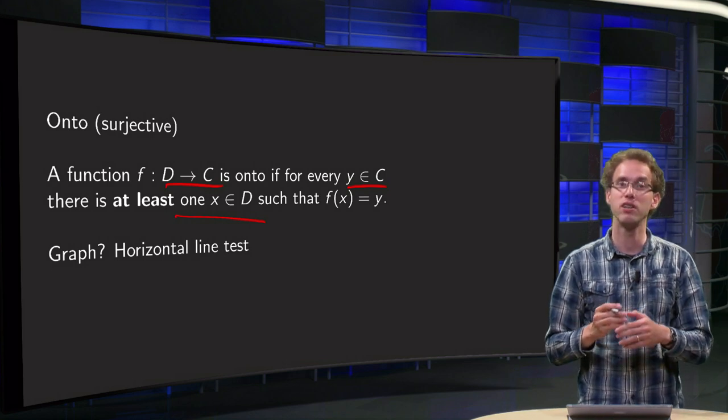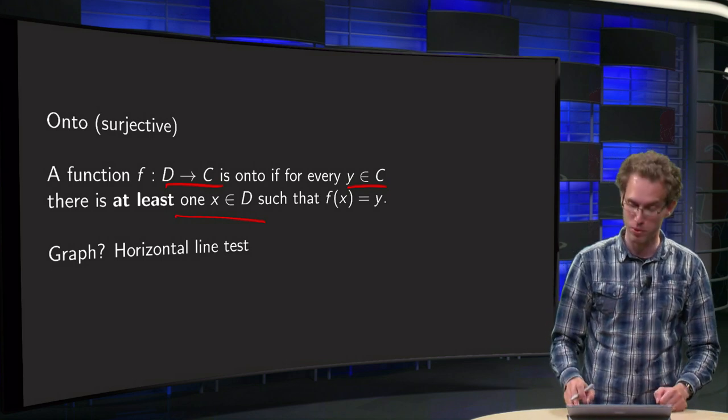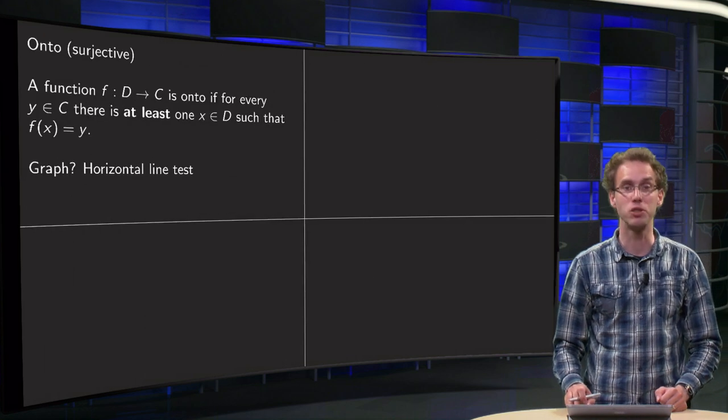How can we see that from the graph? We use a horizontal line test.